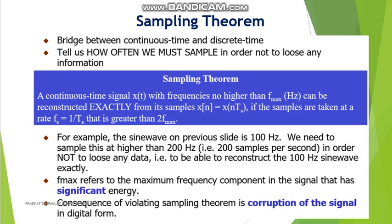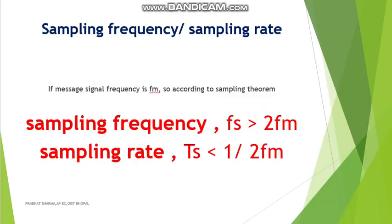For example, suppose we have a message signal of 100 hertz — as we saw in the previous slide, we used a frequency of 100 hertz. We need to sample this at higher than 200 hertz, since the sampling frequency must be greater than twice the message frequency. We take a sampling frequency of more than 200 hertz in order not to lose any data and to reconstruct the 100 hertz sine wave exactly. f_max refers to the maximum frequency component with significant energy. If message signal frequency is fm, then sampling frequency fs must be greater than 2·fm and sampling rate Ts must be less than 1/(2·fm).